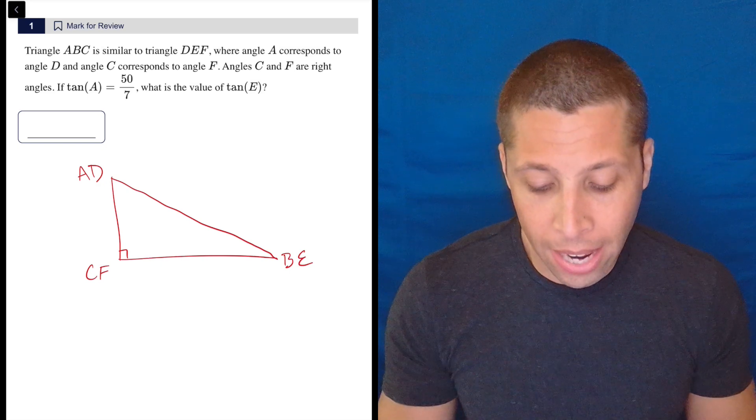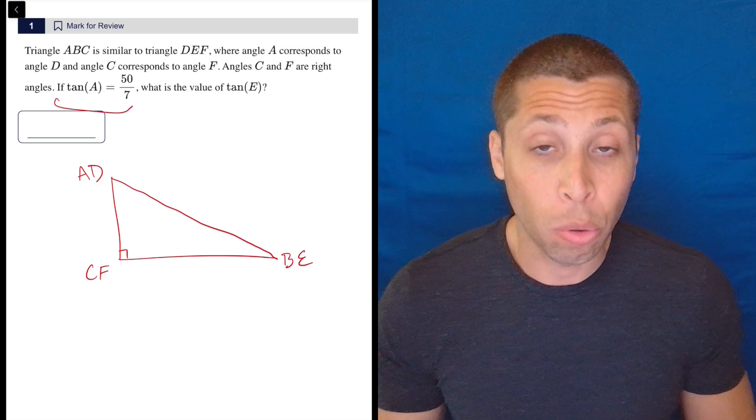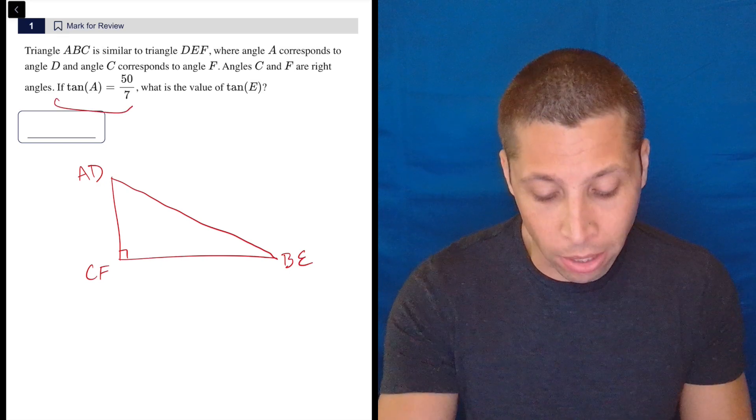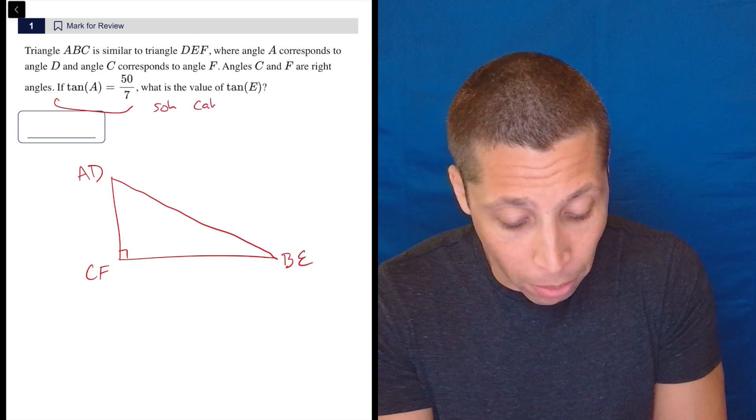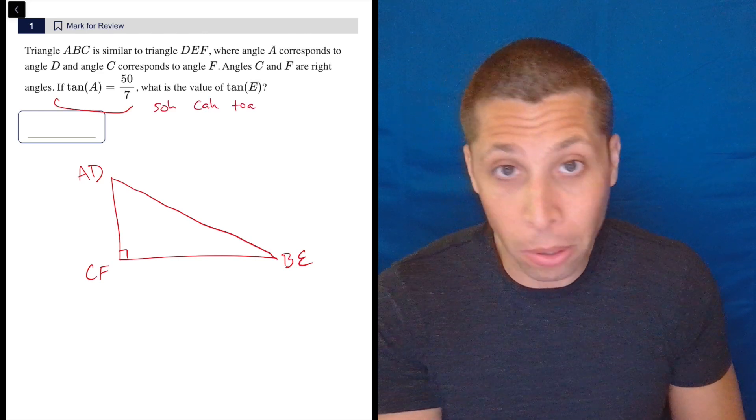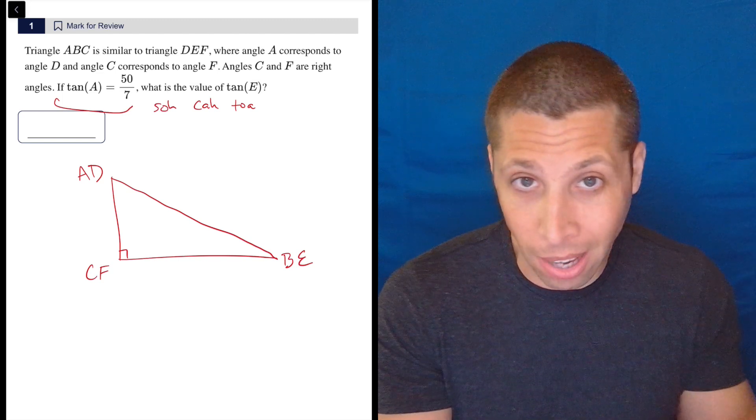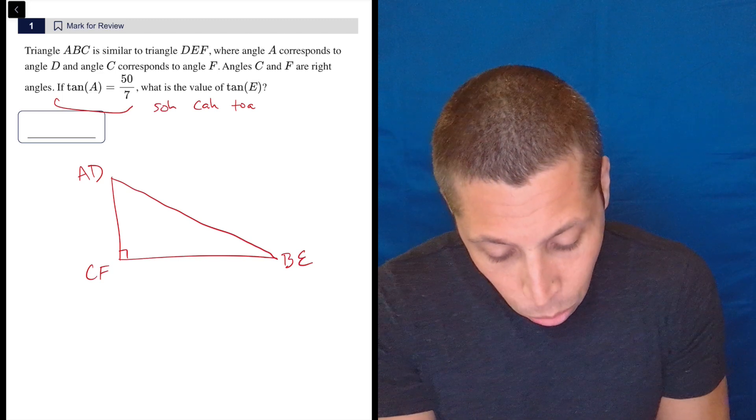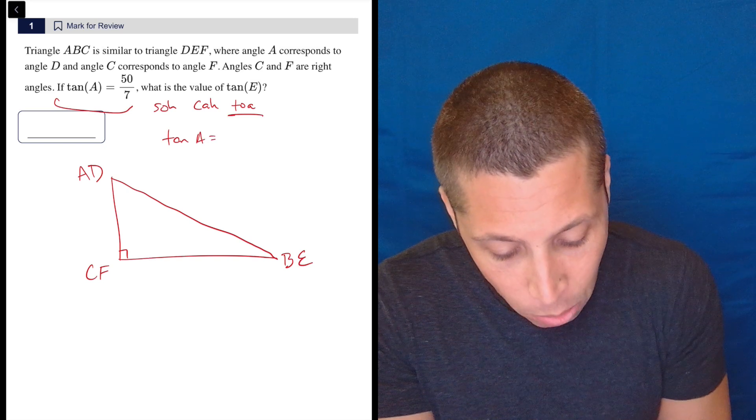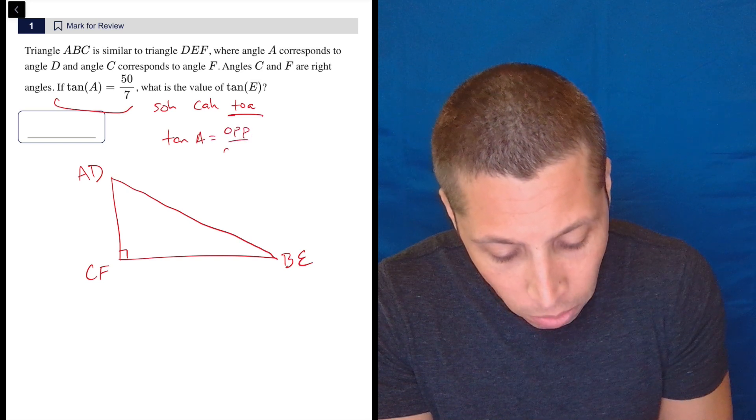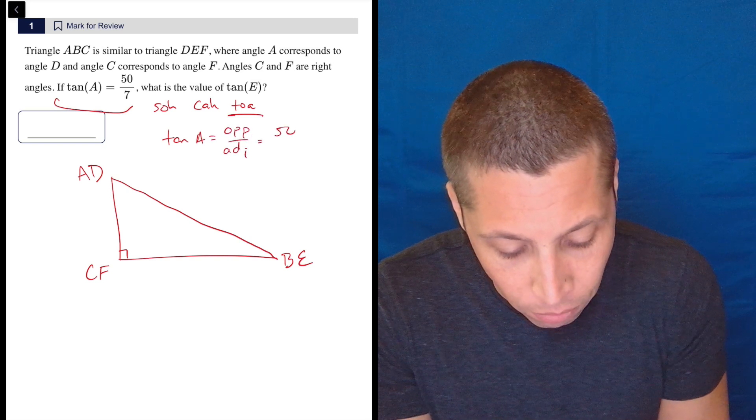They tell me that the tangent of angle A, which would be the same as tangent of angle D, is 50 over 7. Let's remind ourselves, SOHCAHTOA - so many people mess this up. Tangent is what we're interested in.